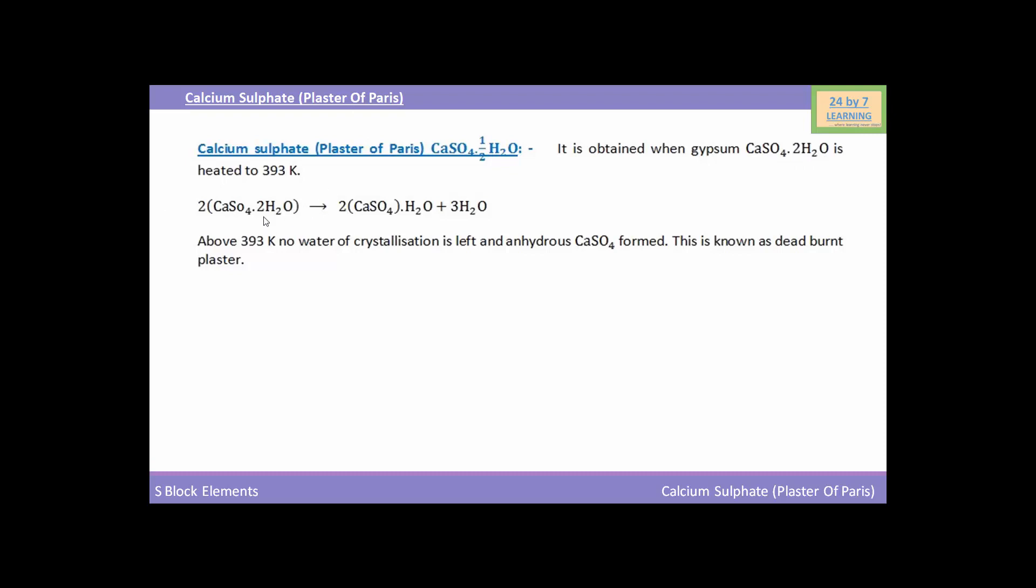You can see CaSO4·2H2O, i.e. gypsum, when heated at 393 Kelvin temperature then it will give CaSO4·½H2O, i.e. plaster of Paris or calcium sulfate, and here three molecules of H2O will be removed.